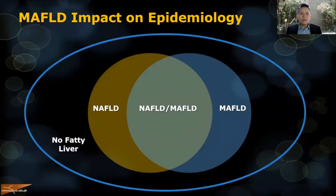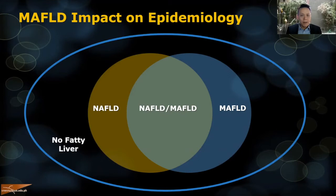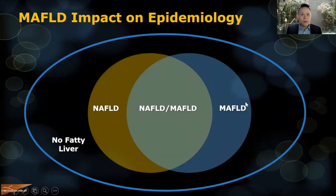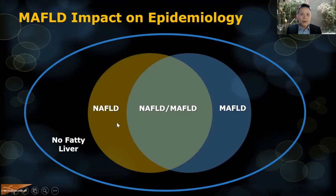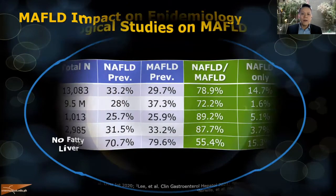Because NAFLD and MAFLD have different diagnostic criteria, you get this pie chart. The majority of patients will meet both NAFLD and MAFLD diagnostic criteria. A smaller group will meet MAFLD but not NAFLD — most likely patients with concomitant chronic liver diseases such as hepatitis B or alcohol. Theoretically, some patients could meet NAFLD but not MAFLD criteria.